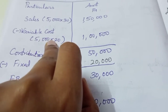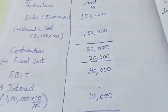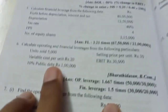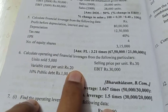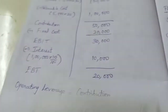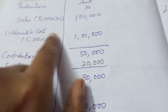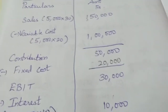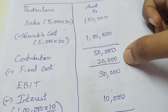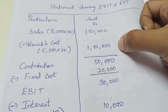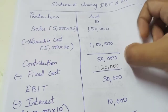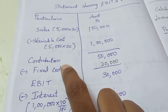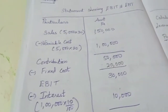Next, Variable Cost: 5,000 units multiplied by variable cost per unit of 20. So 5,000 into 20 gives us 1,00,000. Sales minus Variable Cost gives Contribution of 50,000.